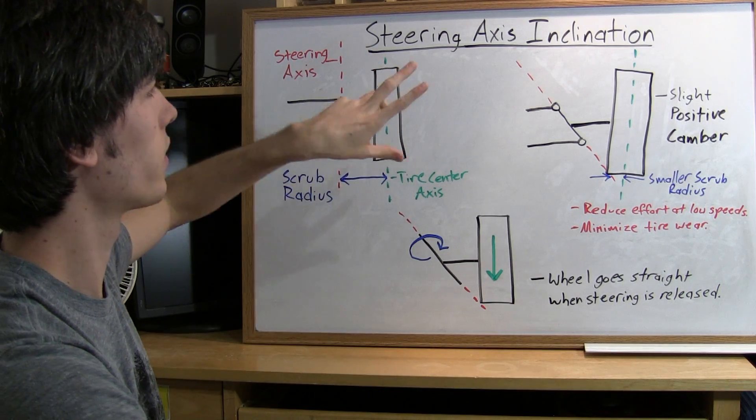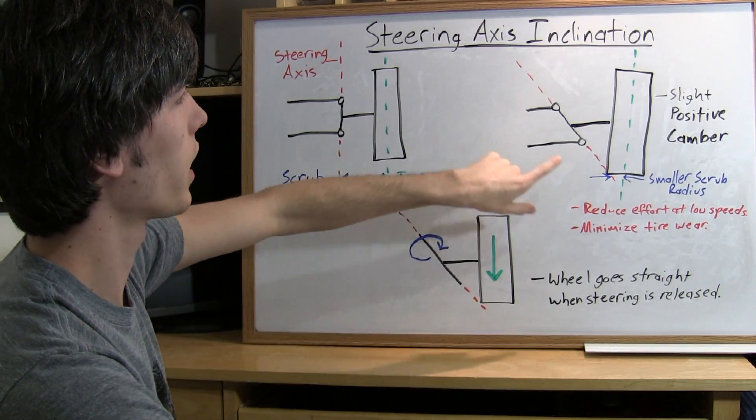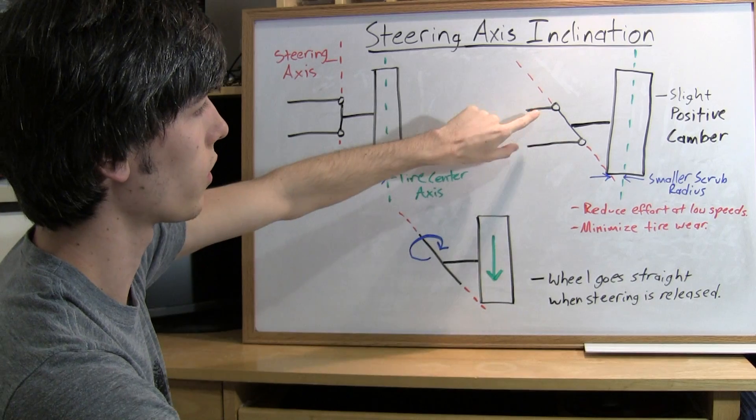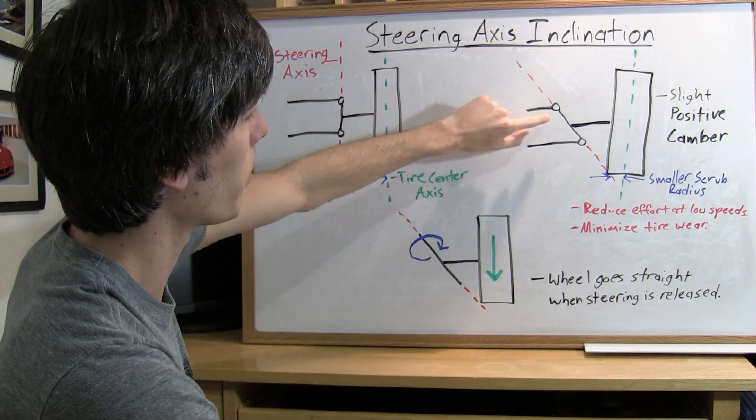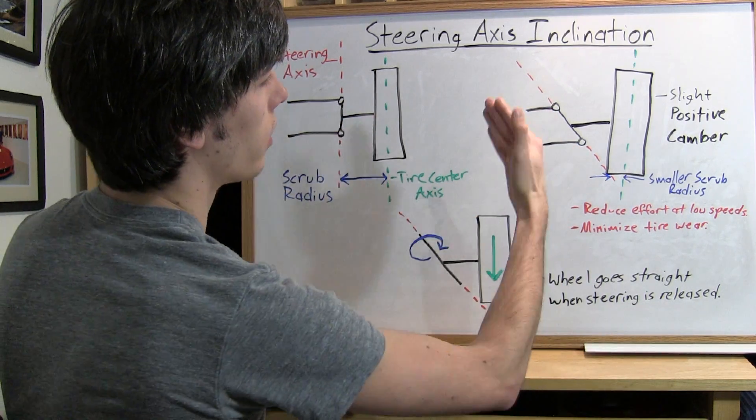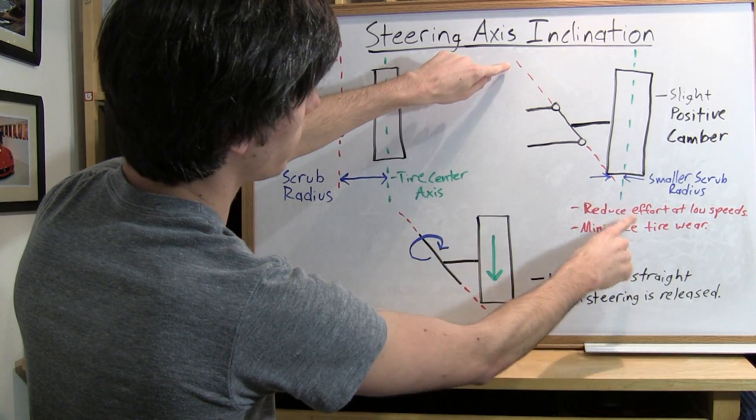Now you fix this with two things. First you're going to have a steering axis inclination so that the top of the steering is a little bit further back than the bottom and then you're going to have this inclined steering axis.